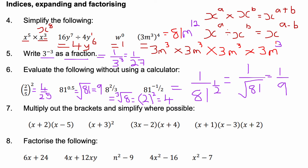Question seven: multiply out the brackets and simplify where possible. For the double brackets (x + 2)(x − 5): x times x is x squared; x times negative 5 is minus 5x; plus 2x gives minus 3x; and 2 times minus 5 is minus 10. So the answer is x squared minus 3x minus 10. For (x + 3) all squared, that's x plus 3 times x plus 3, which gives x squared plus 6x plus 9.